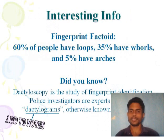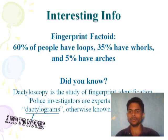Interesting information is that 60% of people have loop, 35% people have whorl, and 5% have arch. Did you know, dactyloscopy is the study of fingerprint identification. Police investigators are experts in dactylogram, otherwise also known as dactyloscopy.